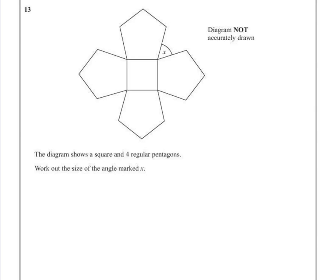Question 13. The diagram shows a square and four regular pentagons. Work out the size of the angle marked x.